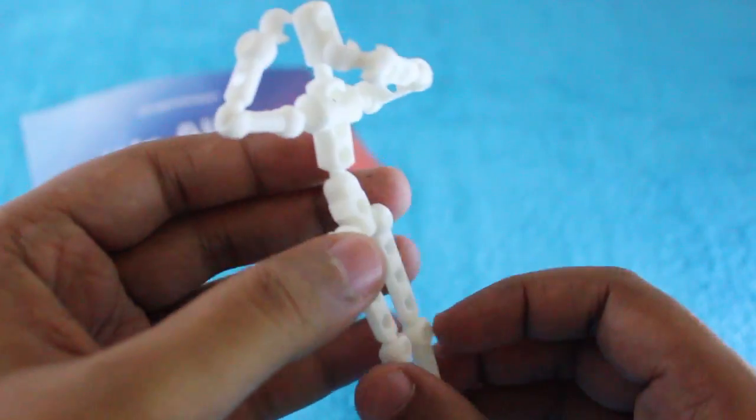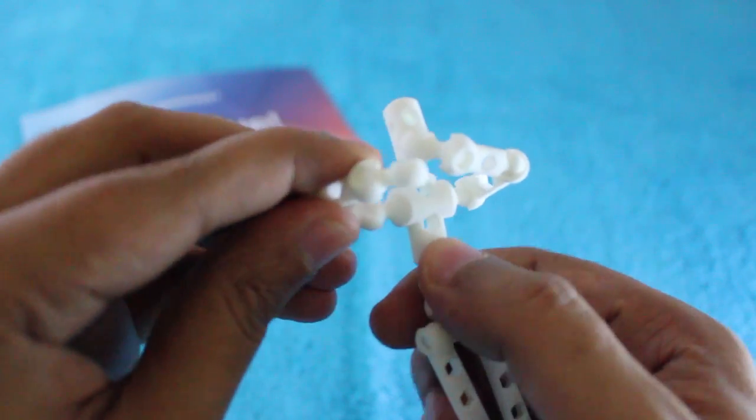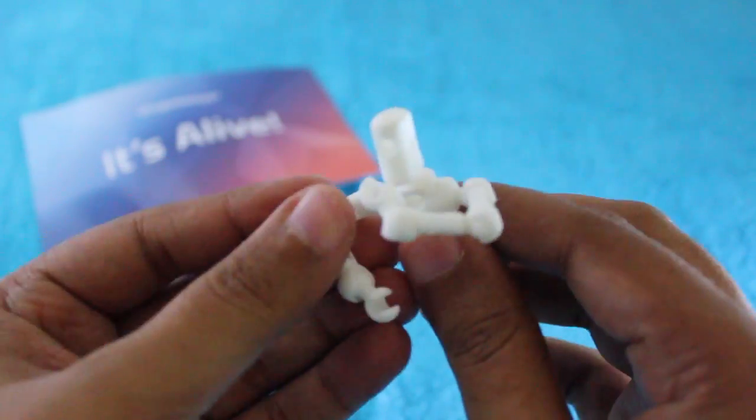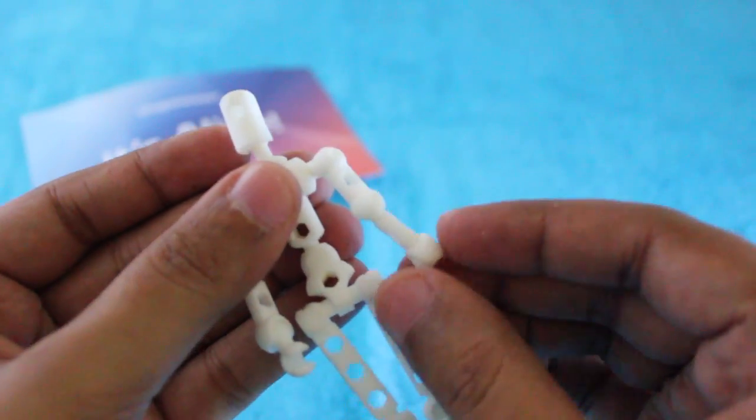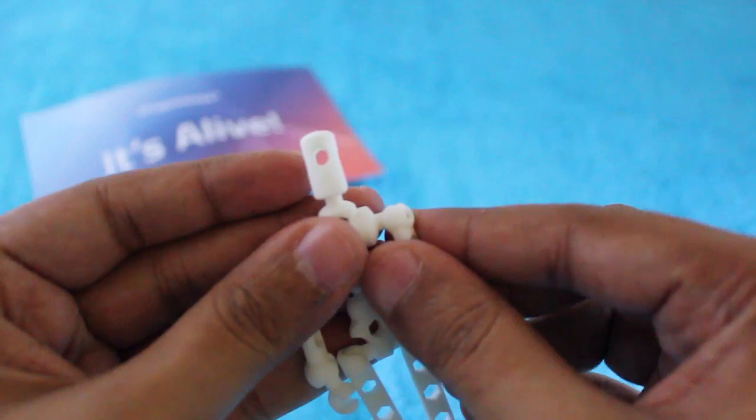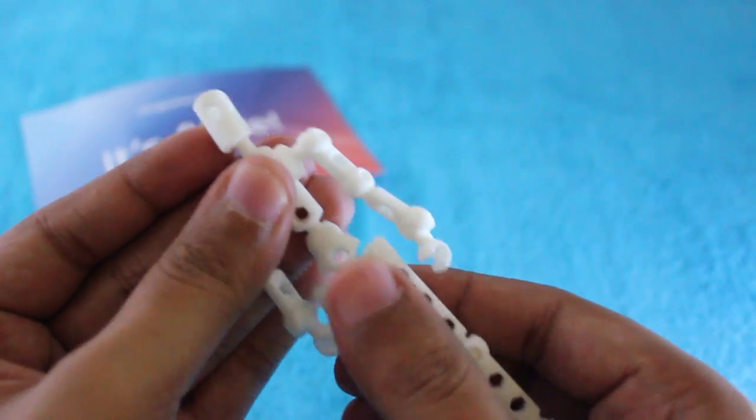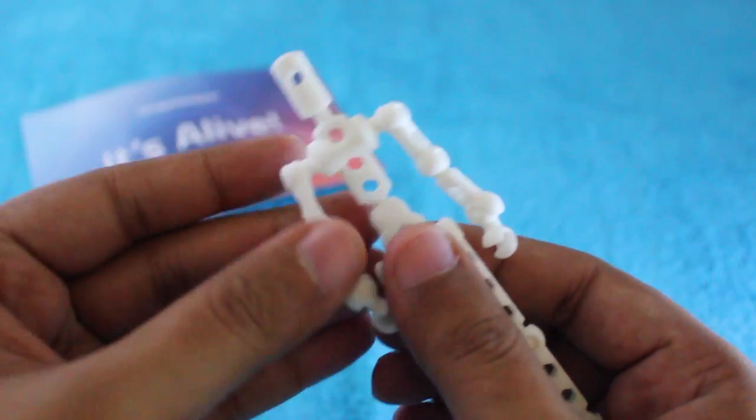As I said, it's really flexible. He has three movements in his legs alone, three for his arms, and his head also moves. His torso moves, so he's really very poseable.